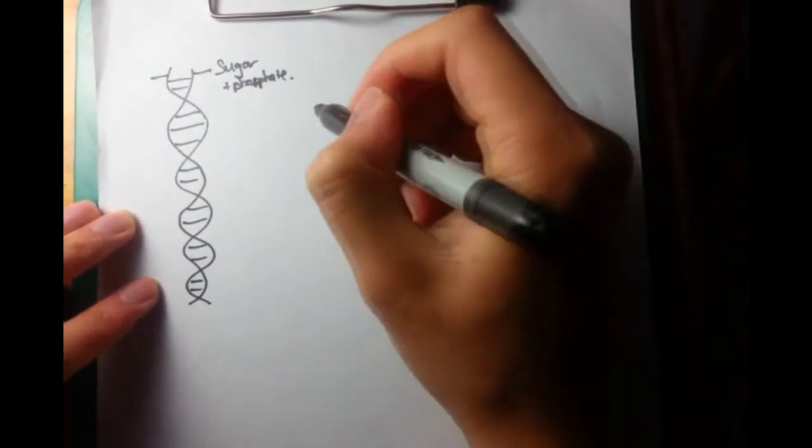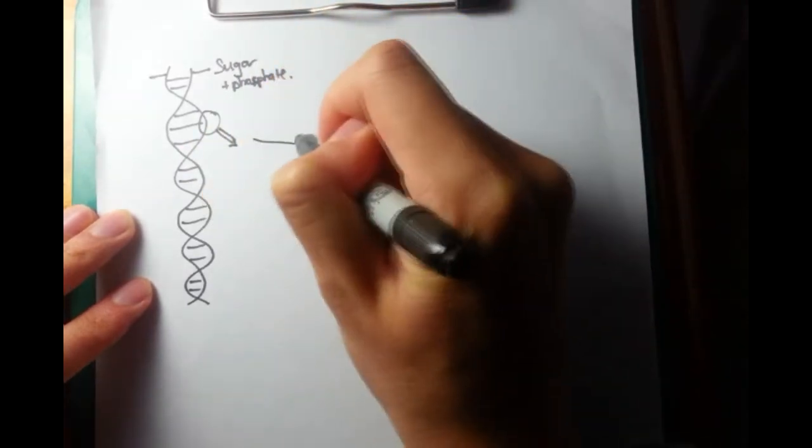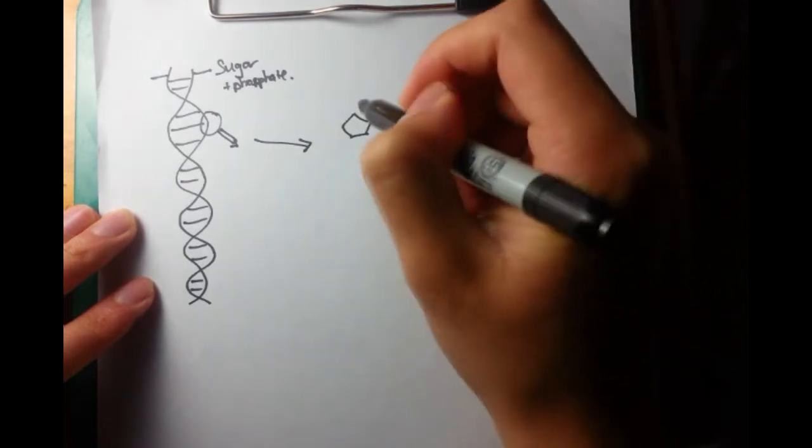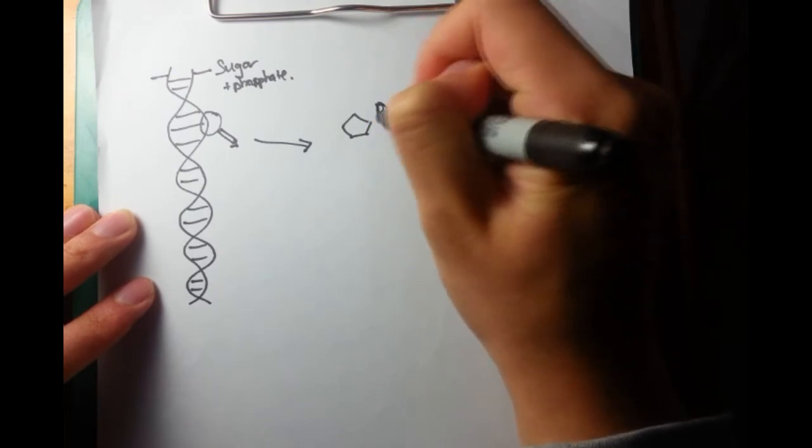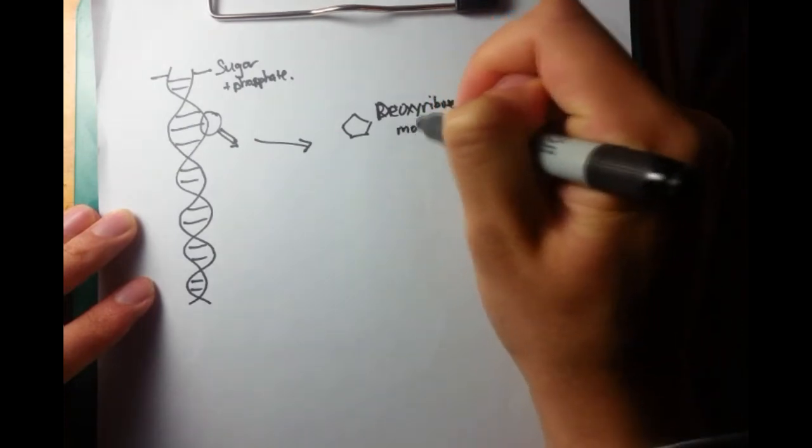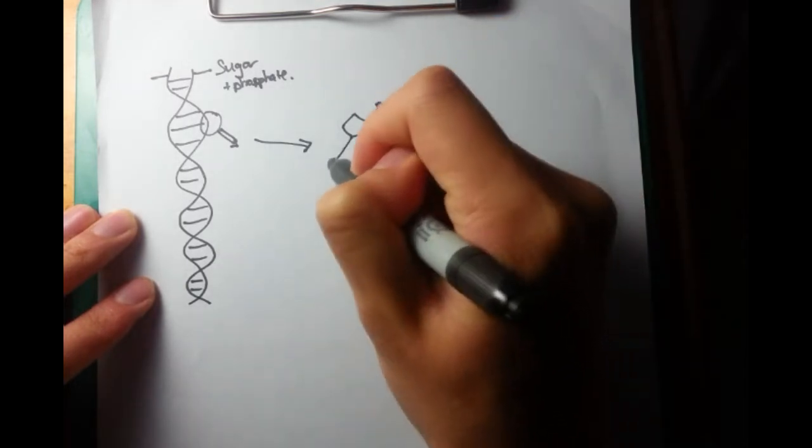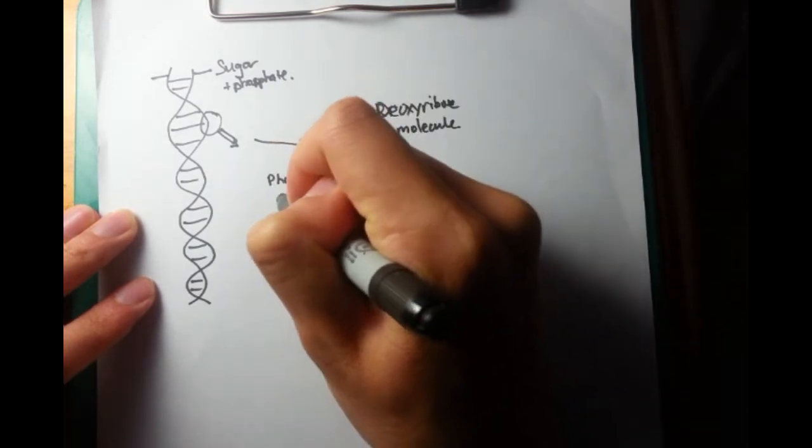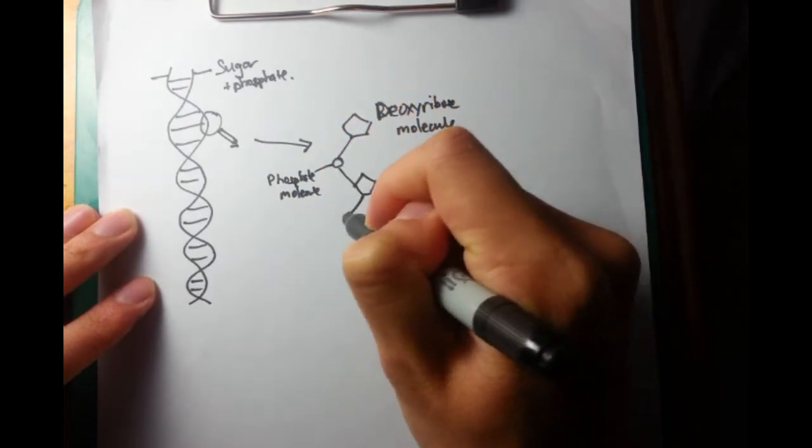And if you look closely in here, if you were to say get a big magnifying glass and have a look closer, what you would see is you would see a pentagon, which is your ribose molecule, or deoxyribose molecule rather. Now connected onto that would be a phosphate molecule. And these will keep on repeating to form the backbone of the DNA molecule.